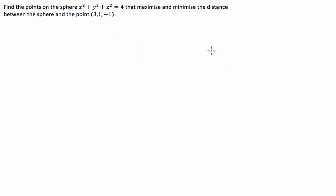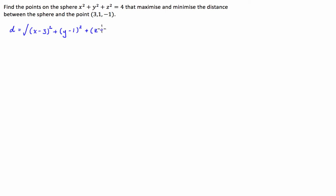First of all, we're going to come up with a formula to optimise this problem. We're going to use a distance formula in three dimensions, which looks a lot like Pythagoras. The distance d is equal to the square root of (x minus 3) squared plus (y minus 1) squared plus (z plus 1) squared. This is our distance formula that we're going to optimise.